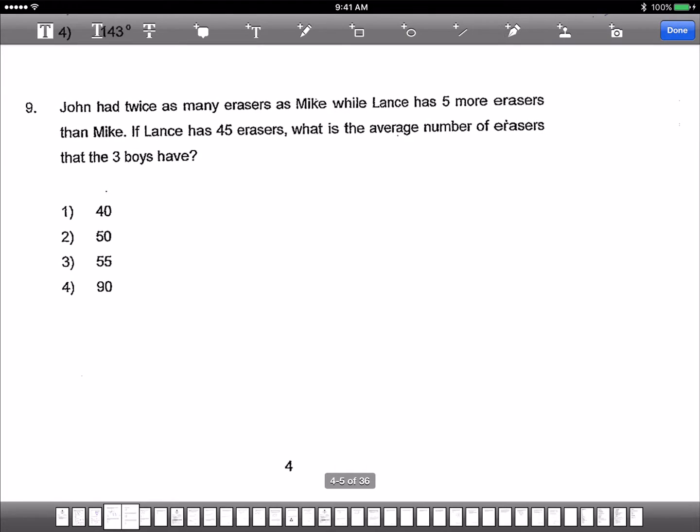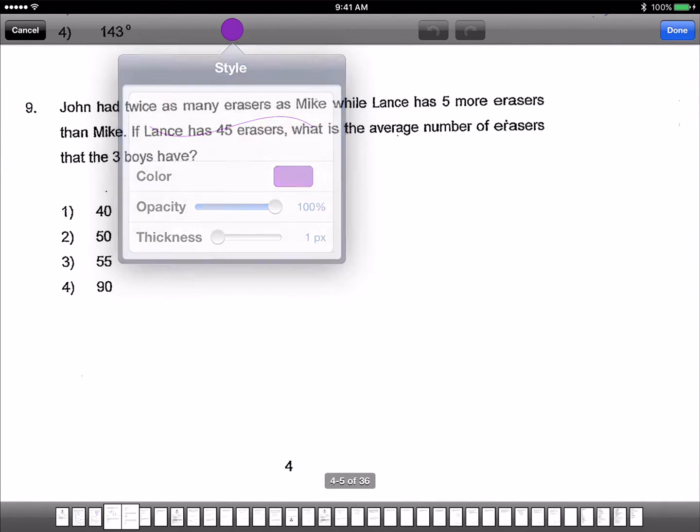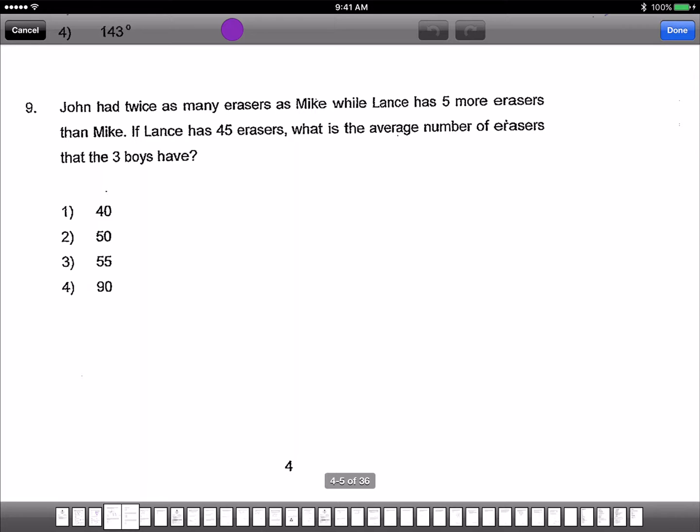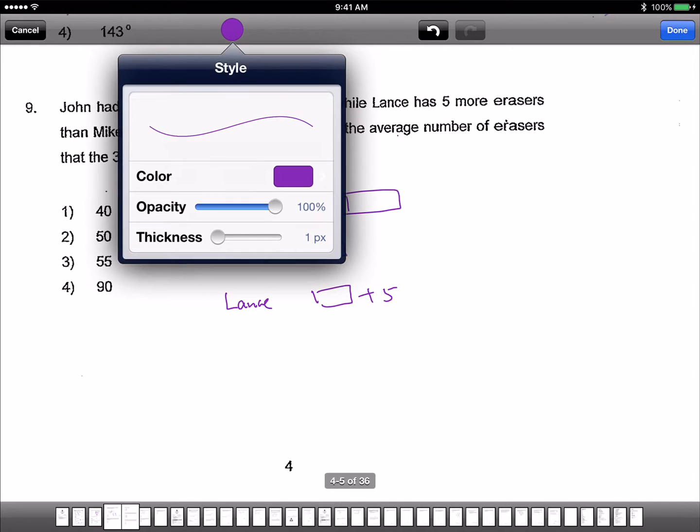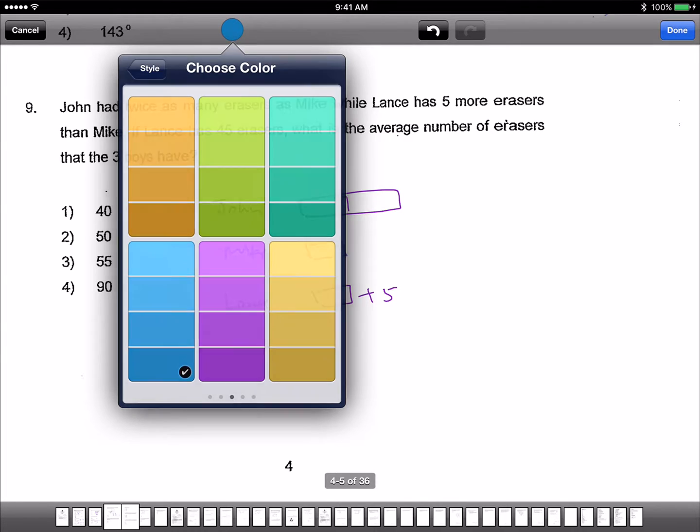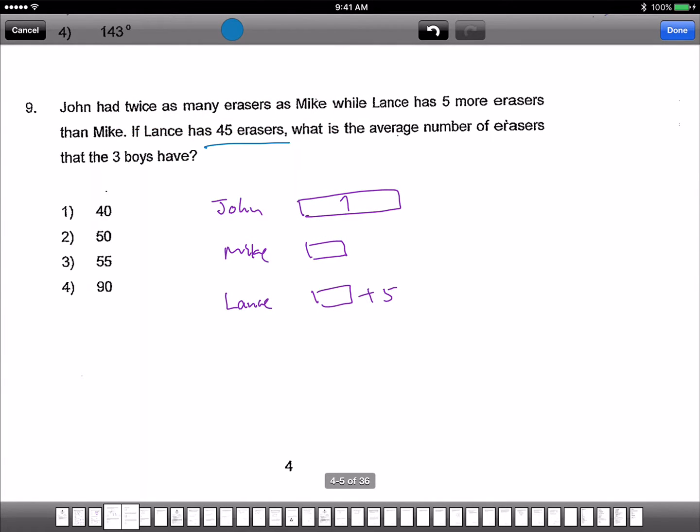Next, John had twice as many erasers as Mike while Lance has 5 more erasers than Mike. Lance has 45 erasers. Now, based on the information, we can deduce a few things. Number 1, since Lance has 45 erasers, here is 5, this must be 40. This is 40, 40 and 40.